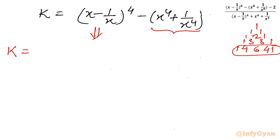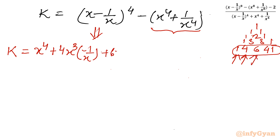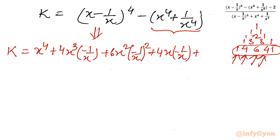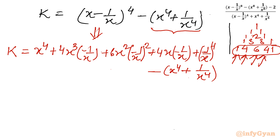Expanding (x - 1/x)^4: coefficient 1 gives x^4; coefficient 4 gives 4x^3(-1/x) = -4x^2; coefficient 6 gives 6x^2(1/x^2) = 6; coefficient 4 gives 4x(-1/x)^3 = -4/x^2; and the last term is (-1/x)^4 = 1/x^4. Then we subtract the remaining term: minus (x^4 + 1/x^4).